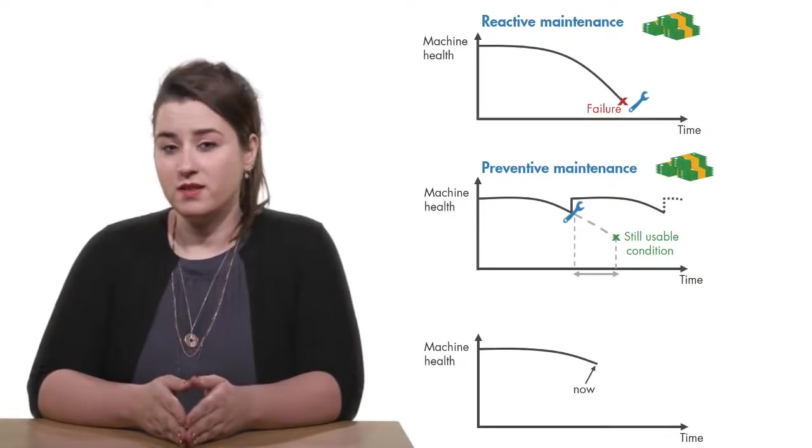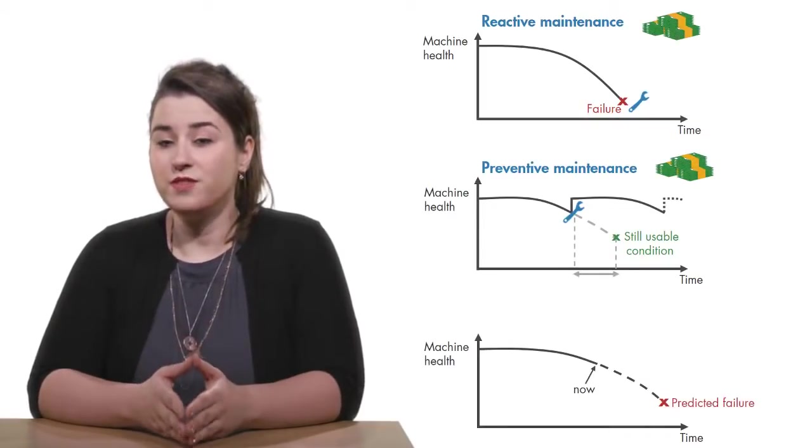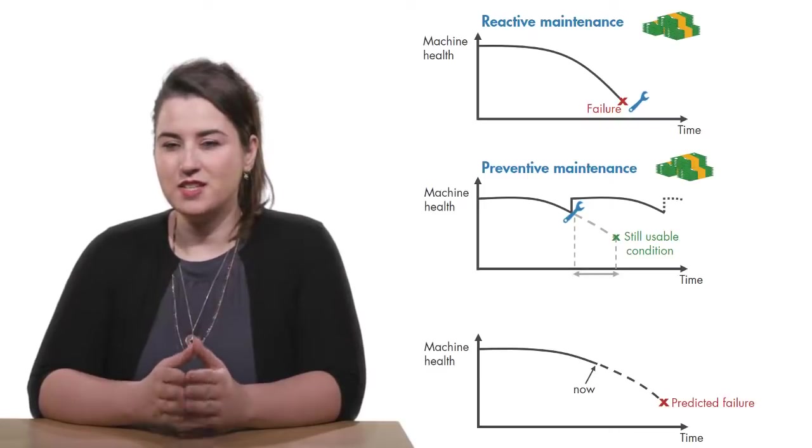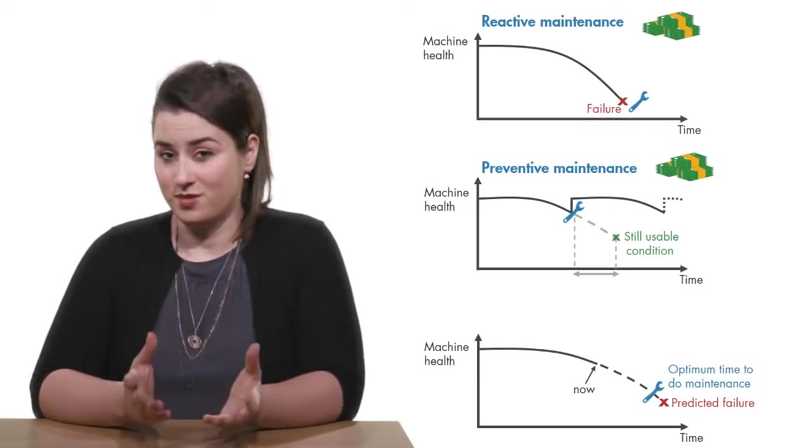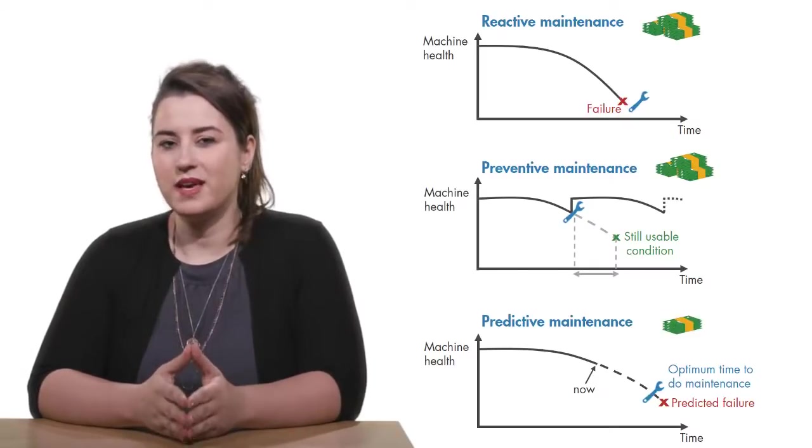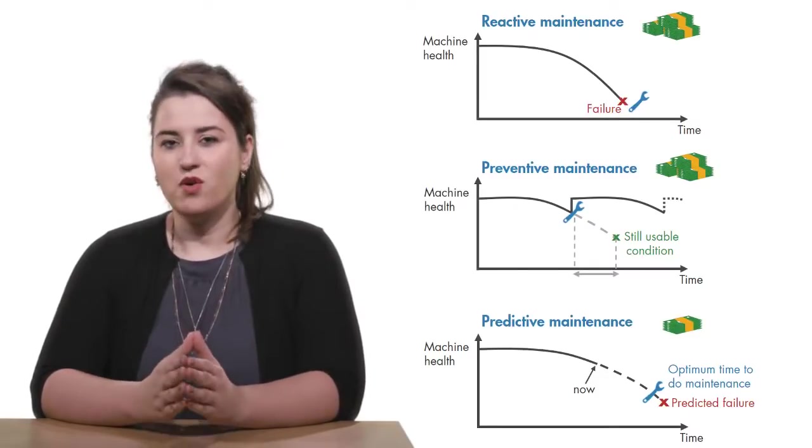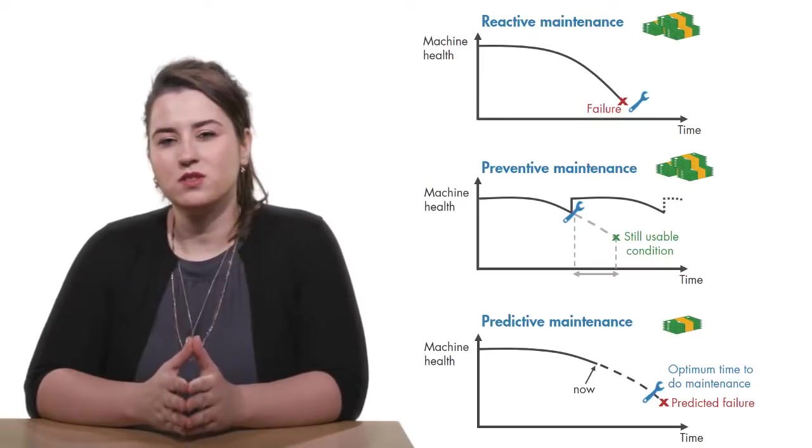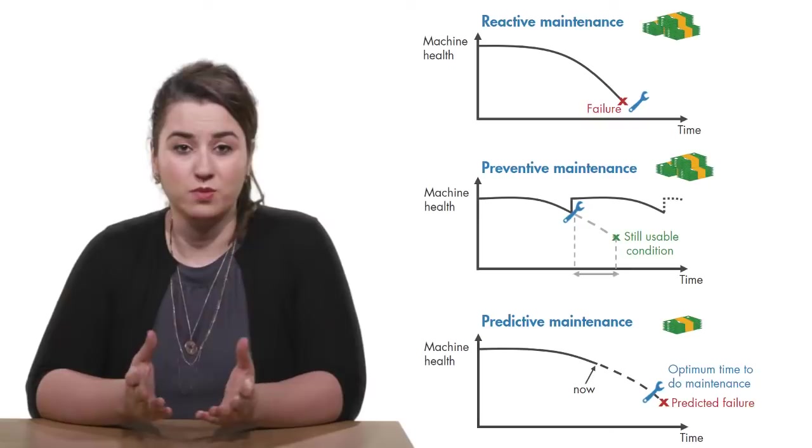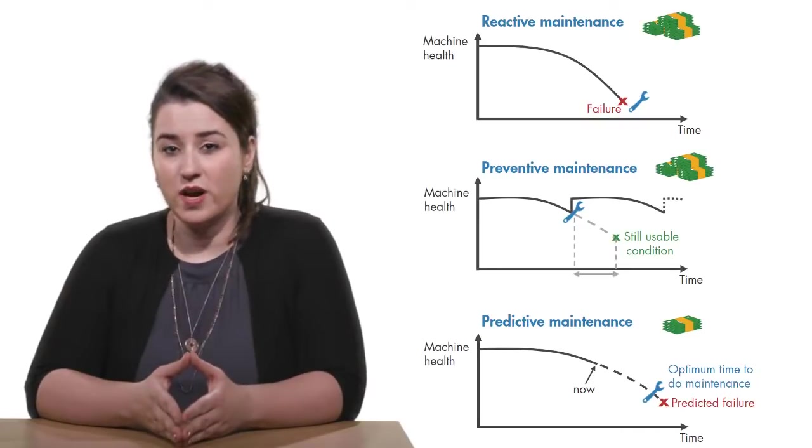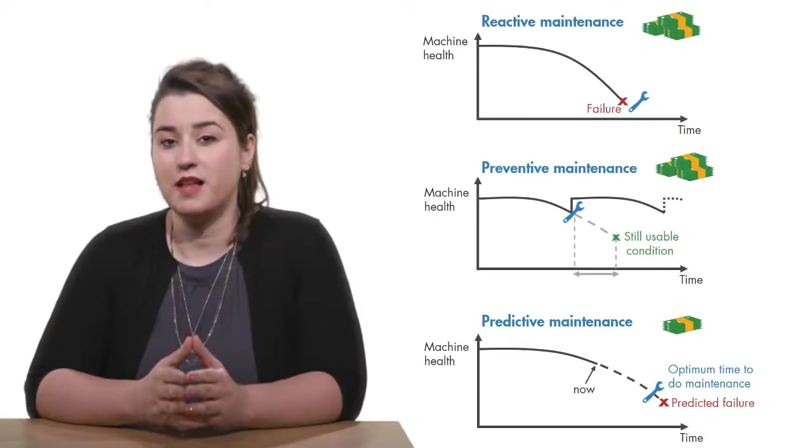However, if you can predict when machine failure will occur, you can schedule maintenance right before it. The good news is that predictive maintenance lets you estimate time to failure. It also pinpoints problems in your complex machinery and helps you identify what parts need to be fixed. This way you can minimize downtime and maximize equipment lifetime.